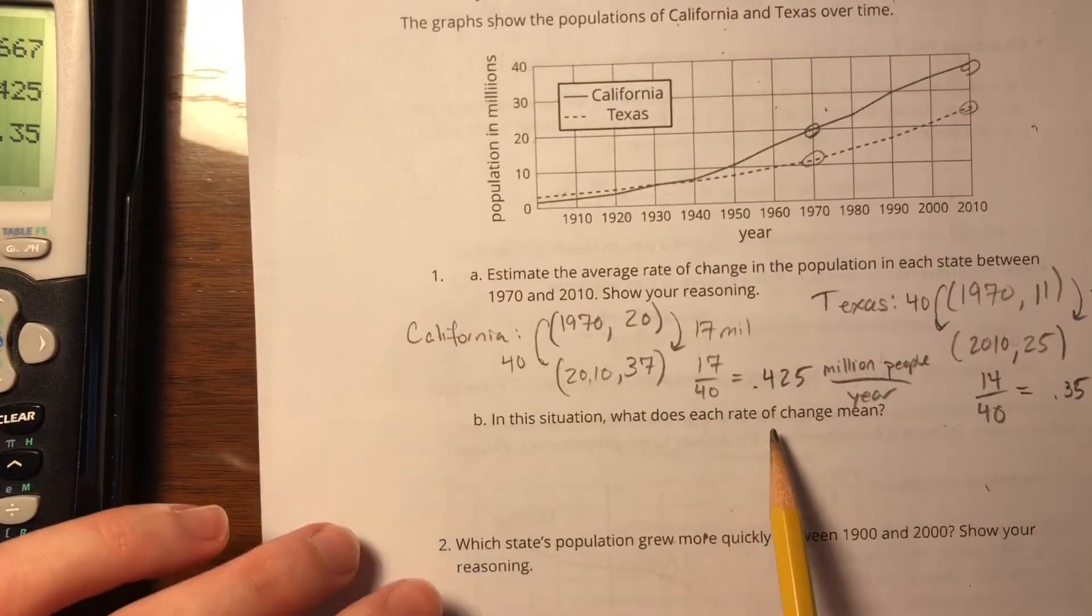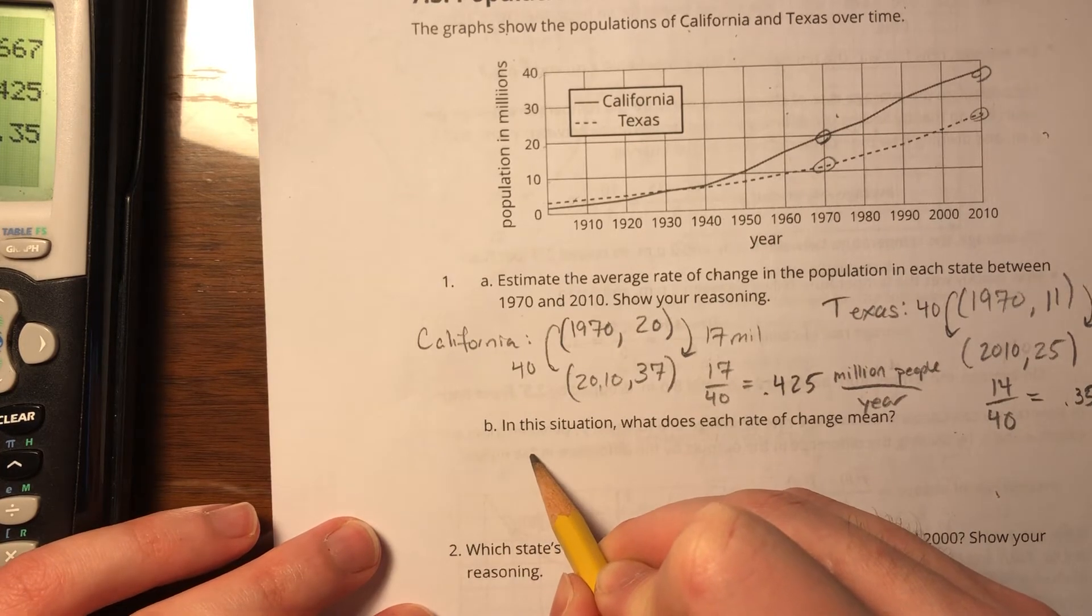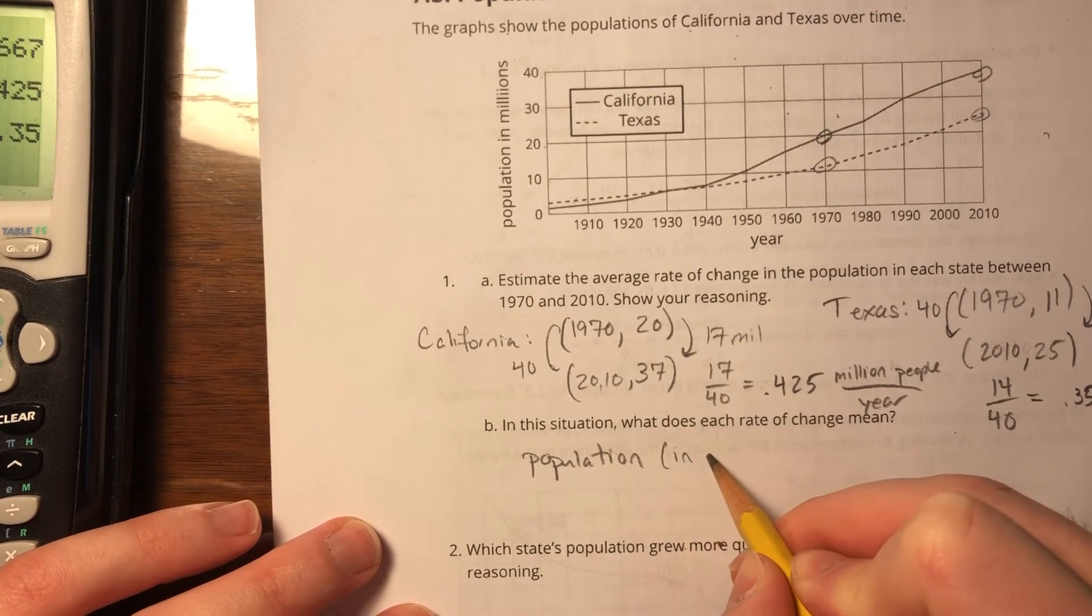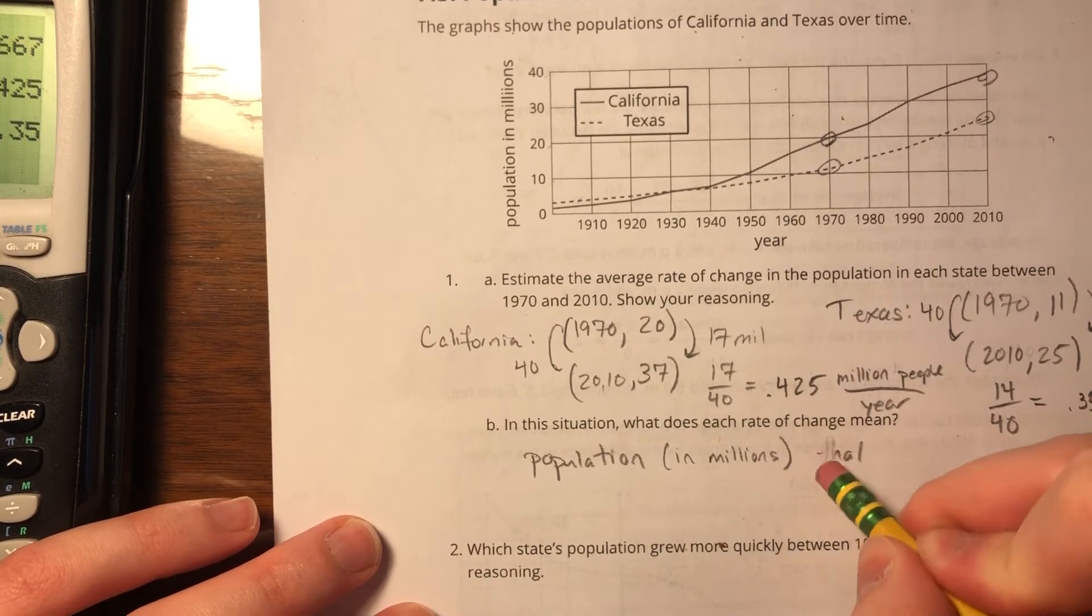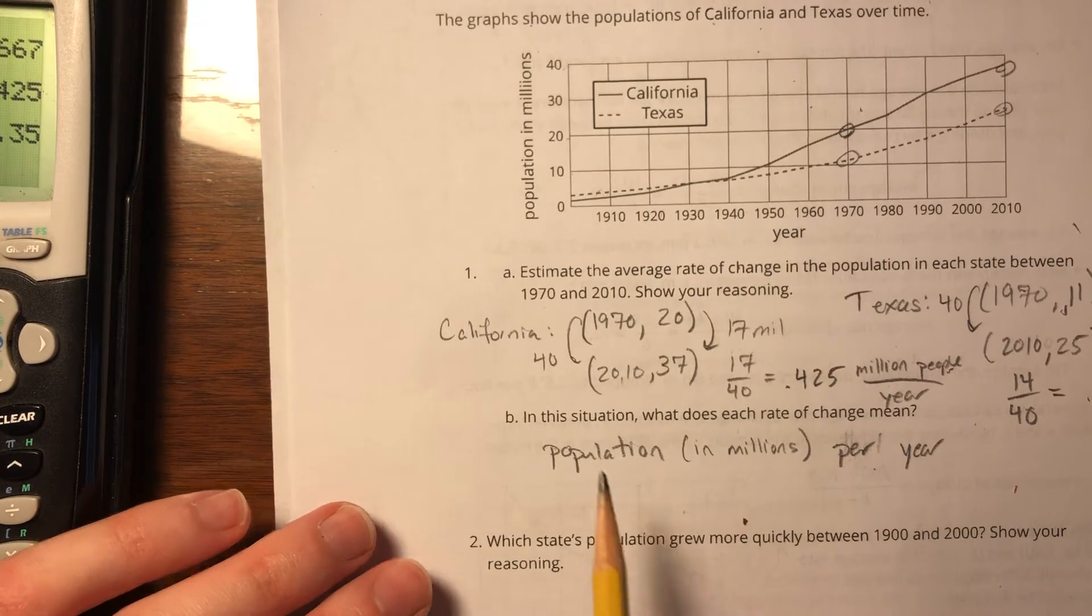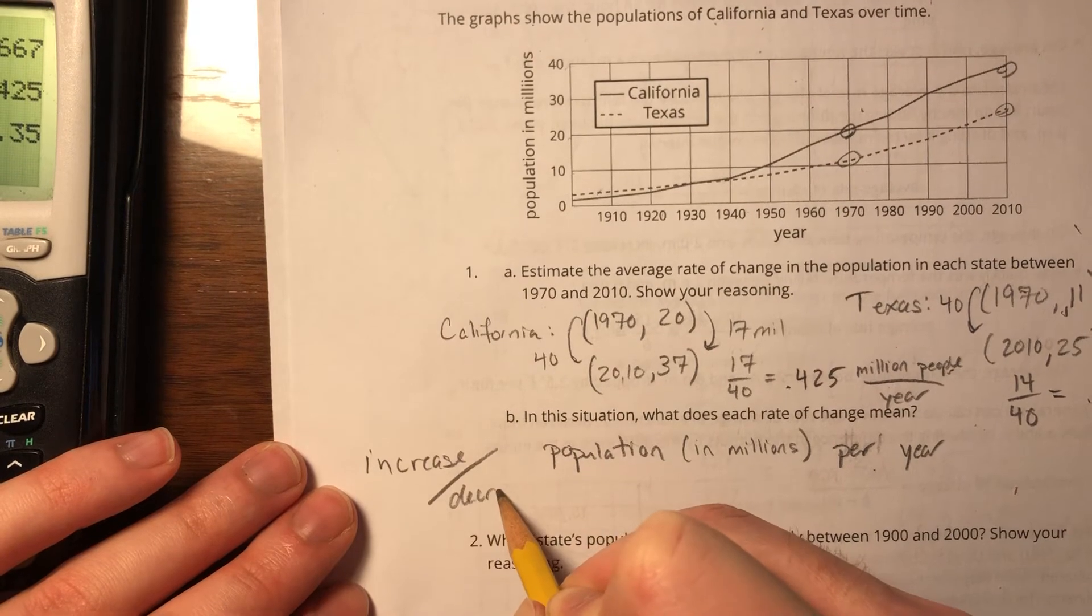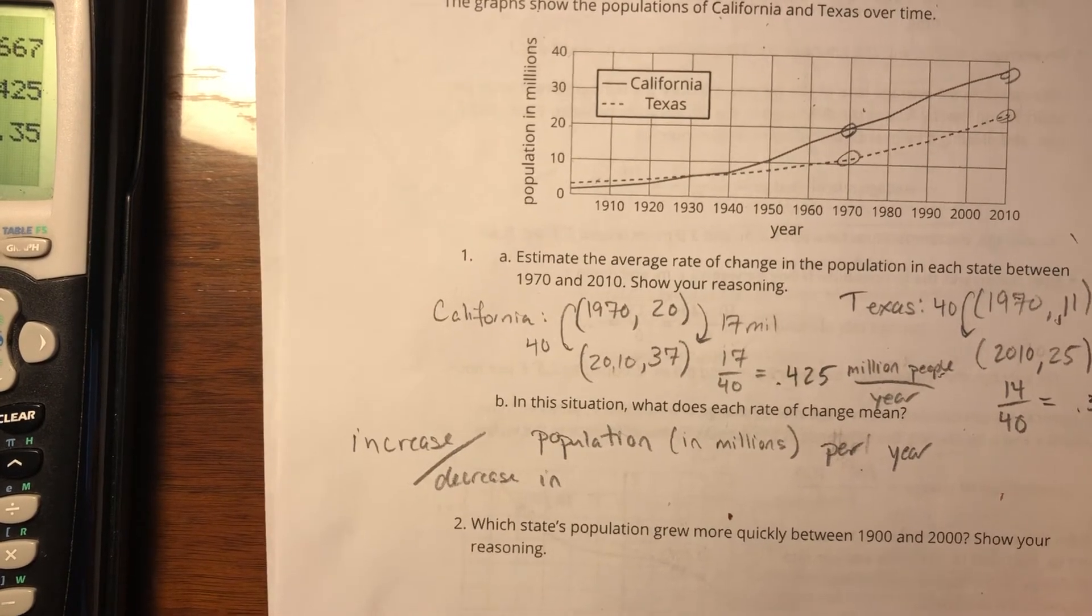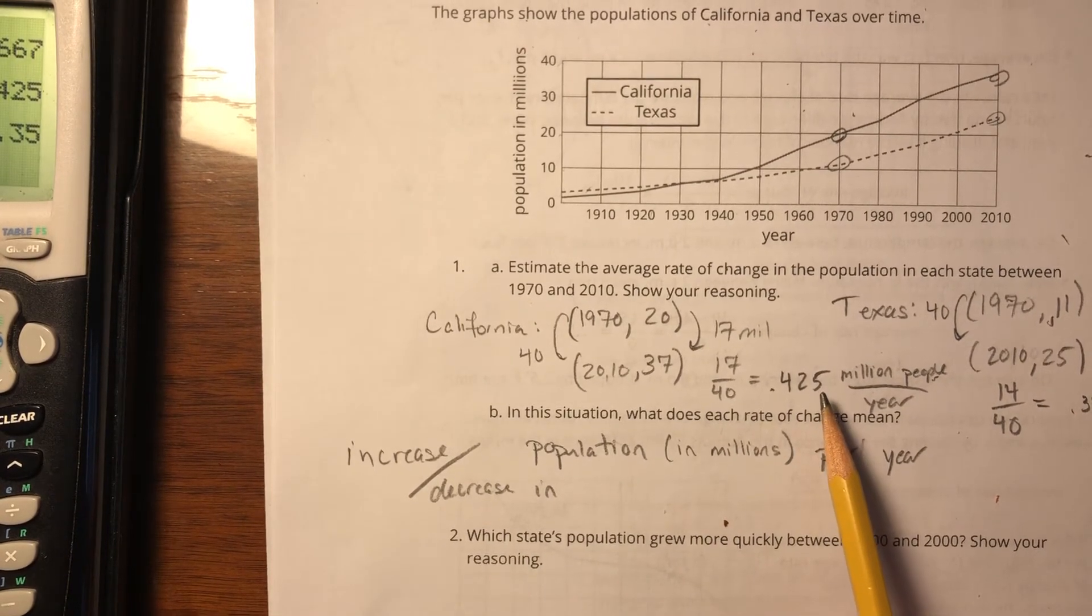And 14 over 40 is 0.35 million people per year. In this situation, what does each rate of change mean? In both these situations, it would be the population in millions per year. And really, I should indicate that it's an increase or decrease in population. We're not saying 0.35 million is the current population of Texas, or 0.25 million is the current population of California. In California, every year,